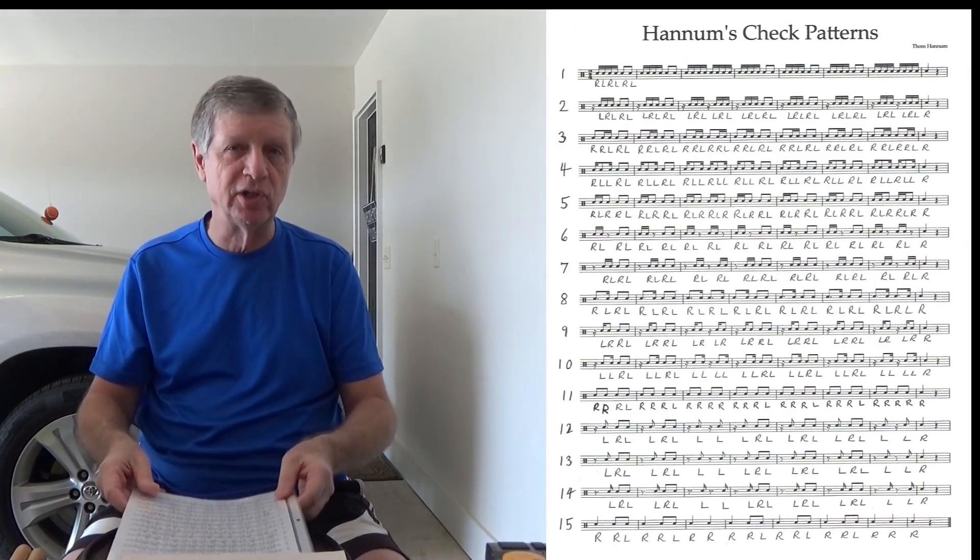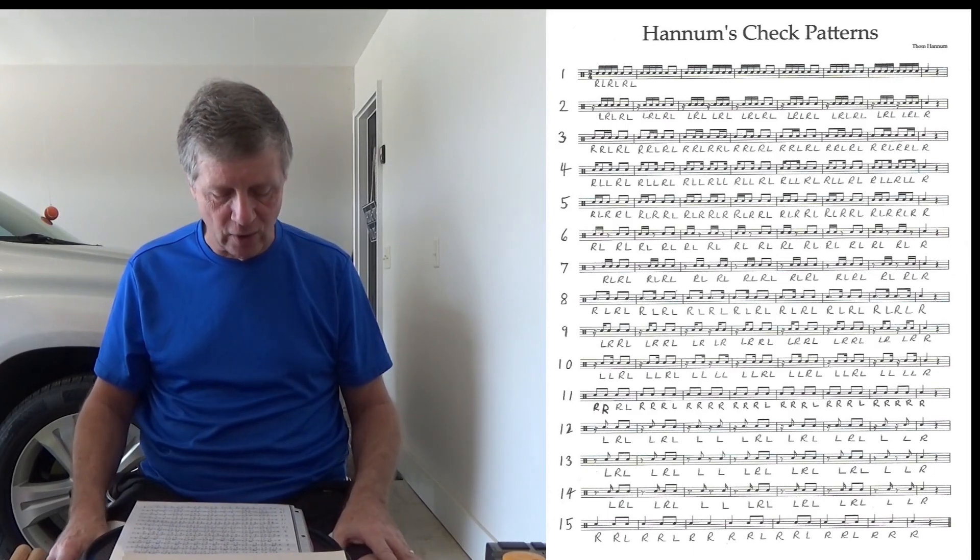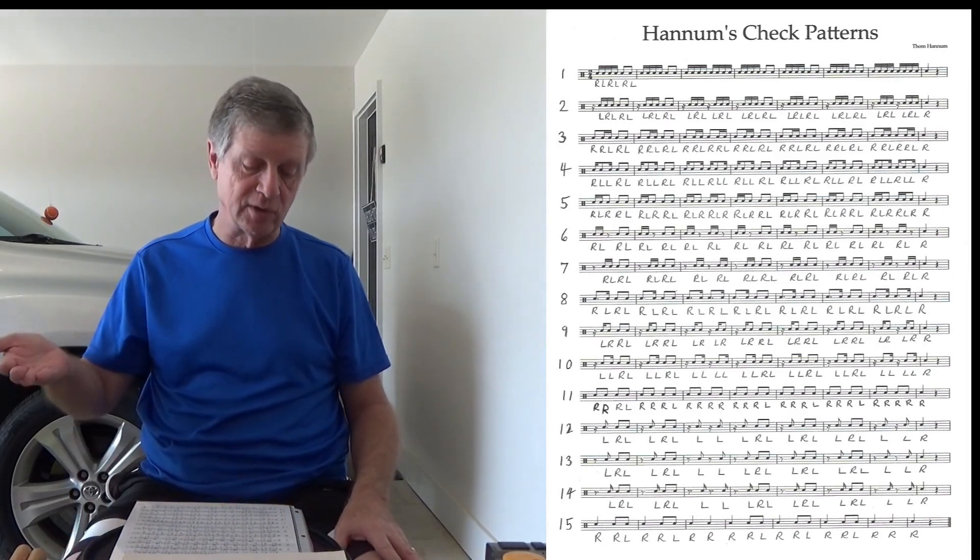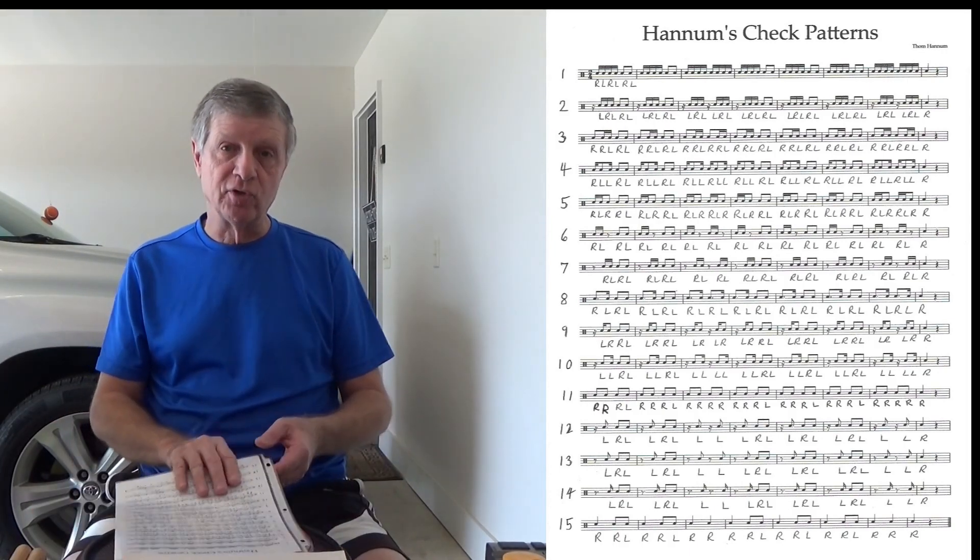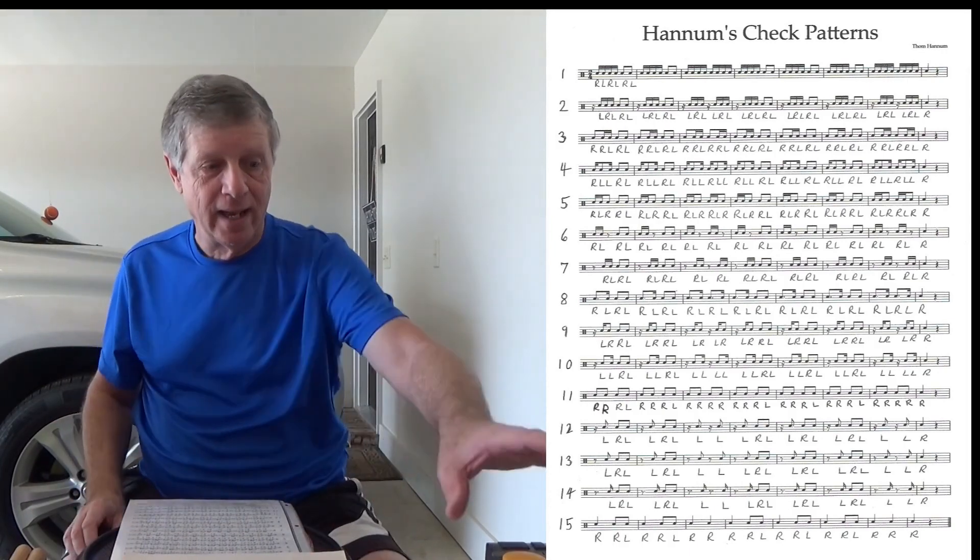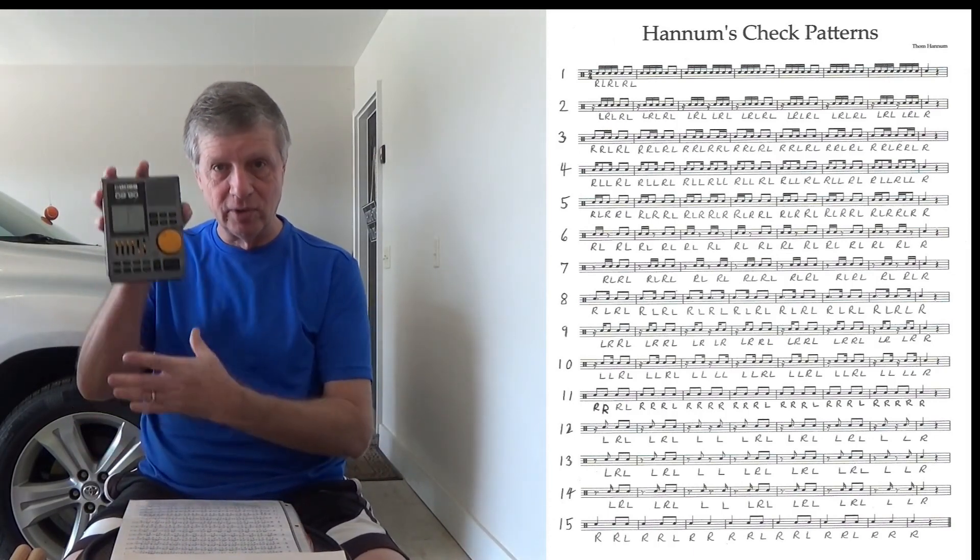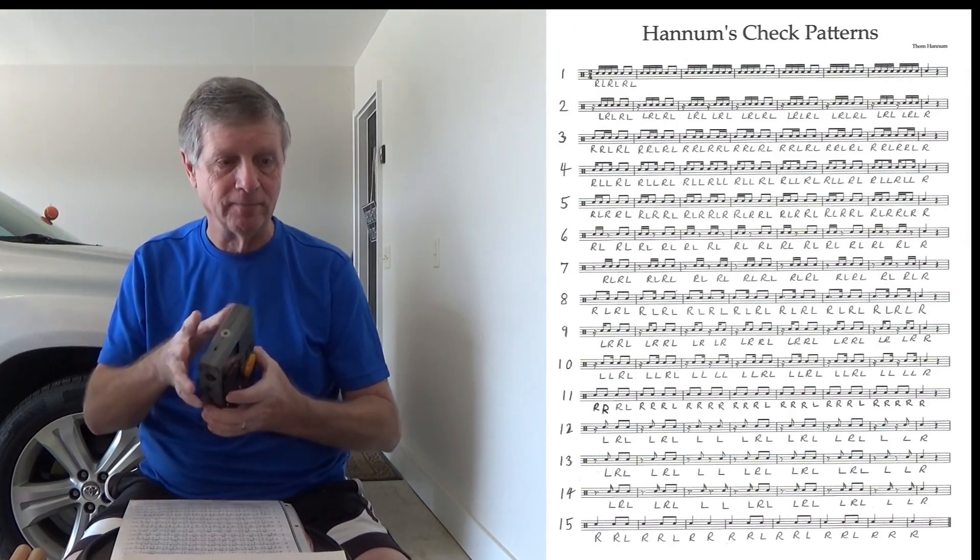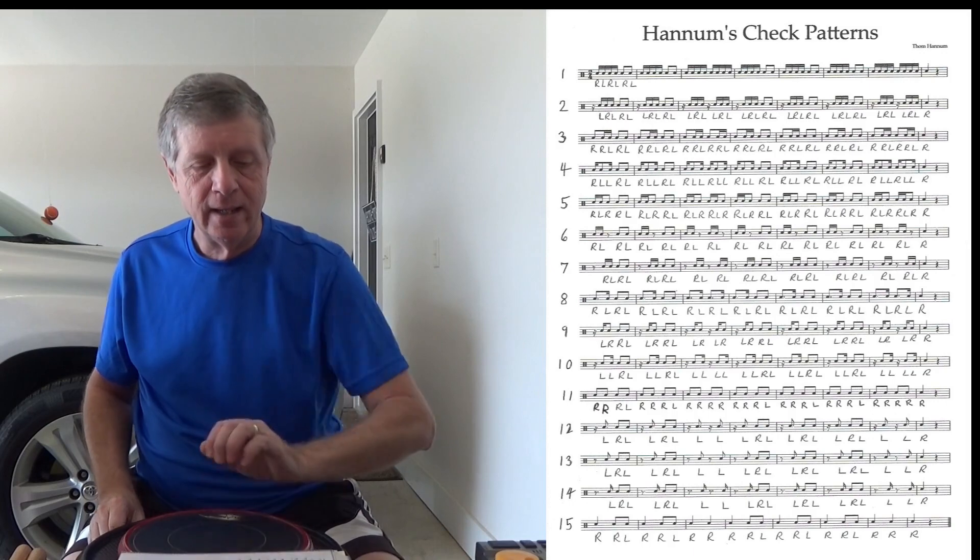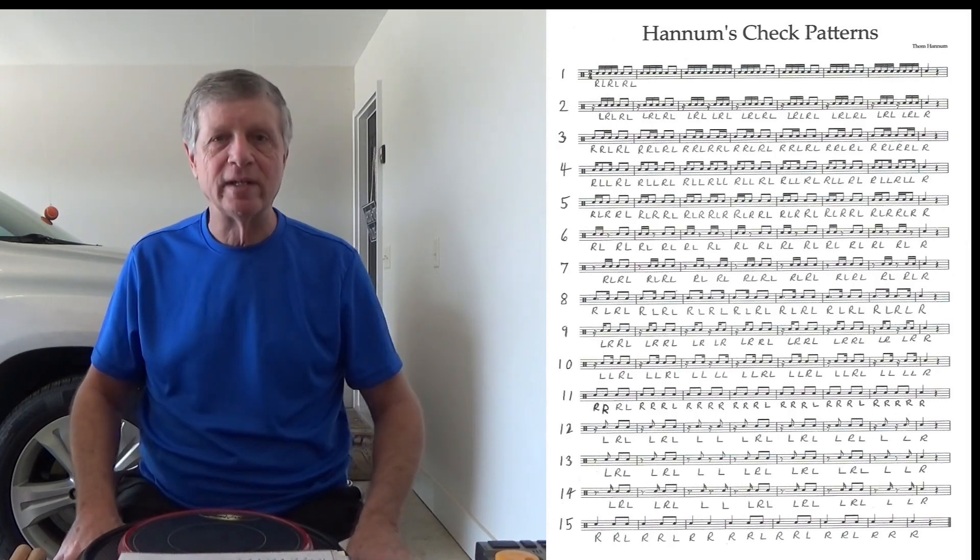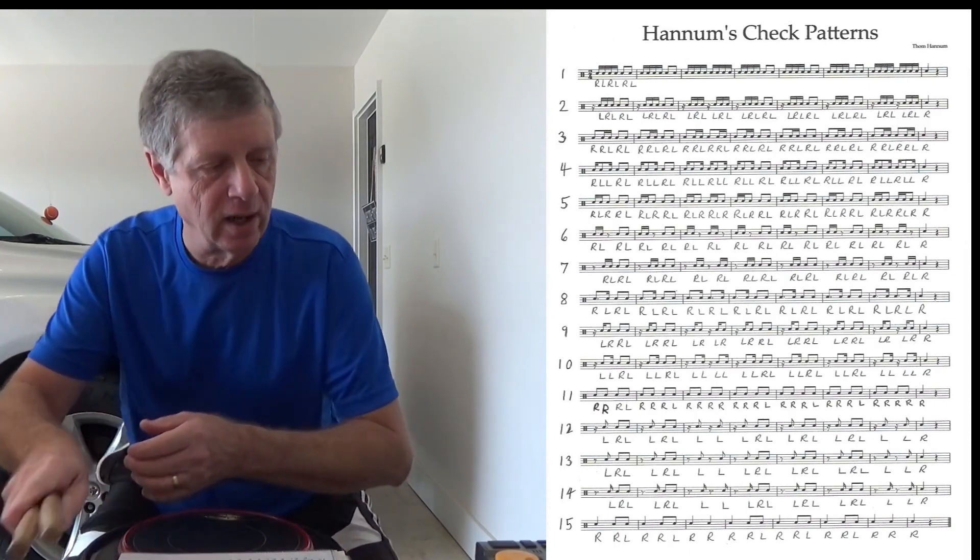This is probably the most difficult part of the sheet from a timing standpoint because we are starting each measure, with the exception of 11, with a rest. Make sure that your timing is impeccable and the way we do that is to follow a metronome. Don't trust your internal metronome, use an external metronome. So without further ado we will play lines 11, 12, 13, 14, and 15.